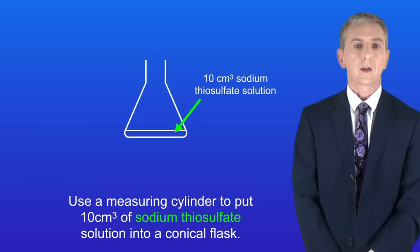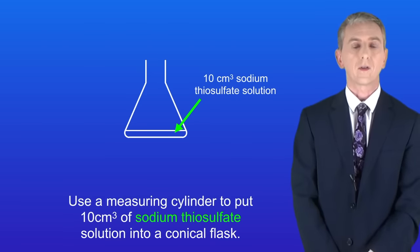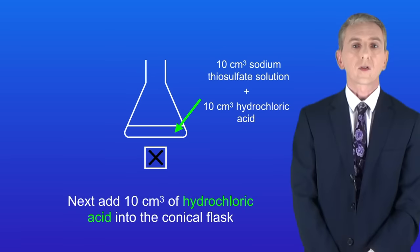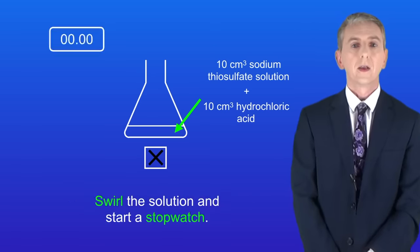First we use a measuring cylinder to put 10 centimeters cubed of sodium thiosulfate solution into a conical flask. We then place the conical flask onto a printed black cross. Next we add 10 centimeters cubed of hydrochloric acid into the conical flask. Now we swirl the solution and start a stopwatch.